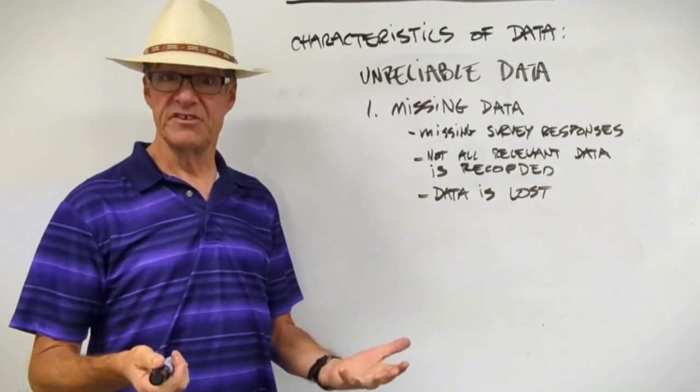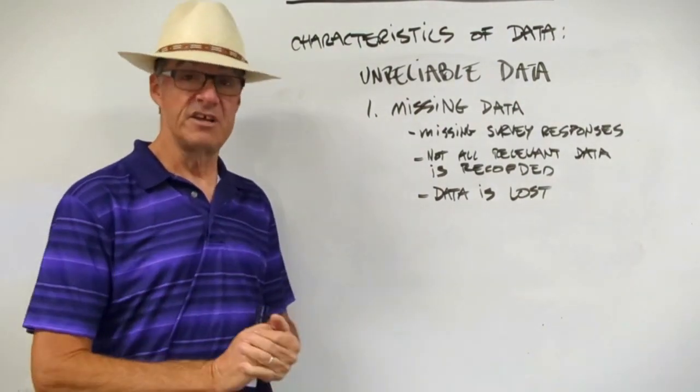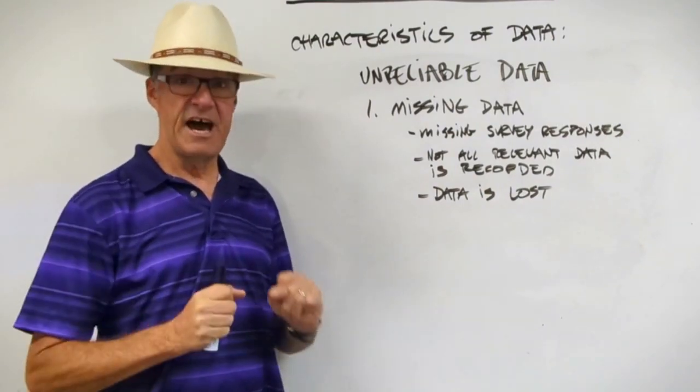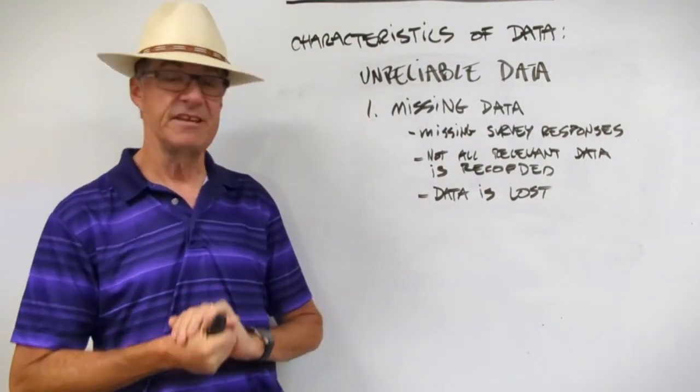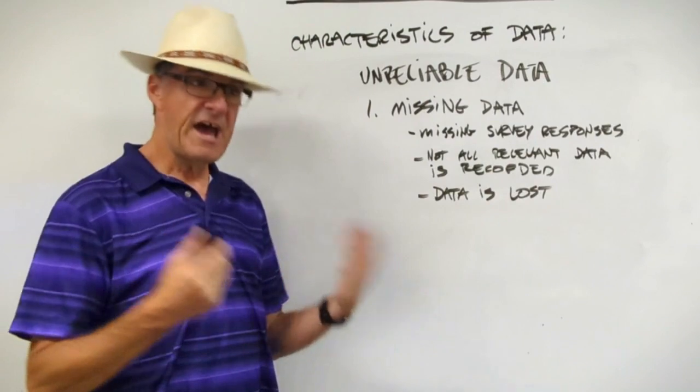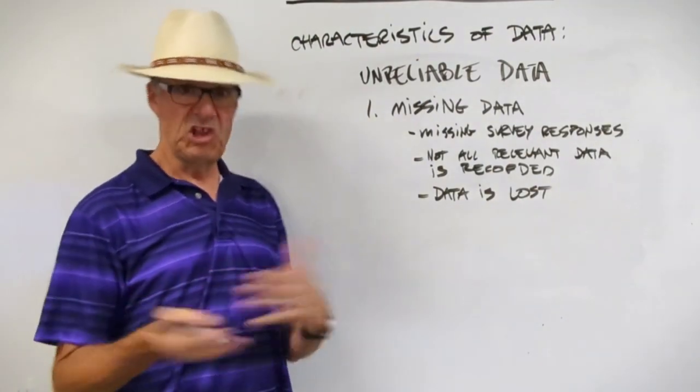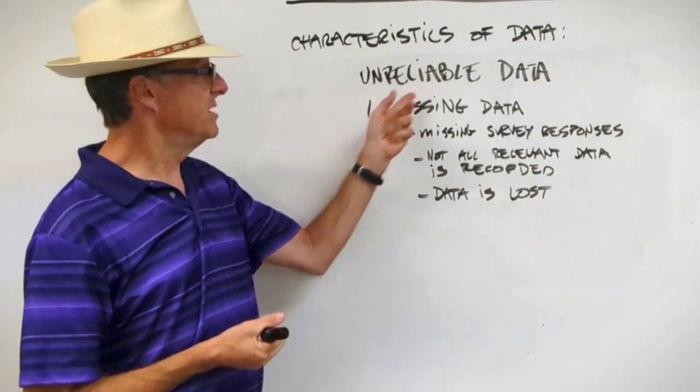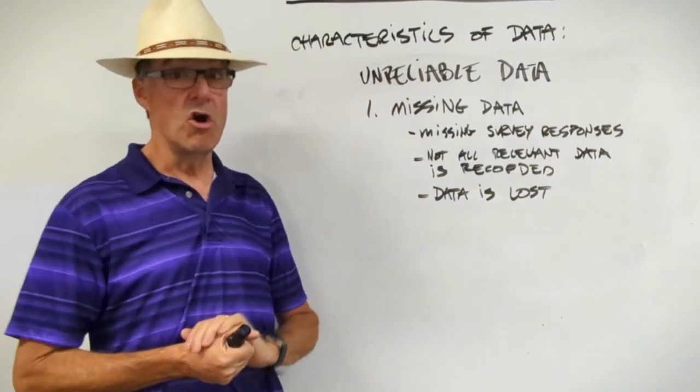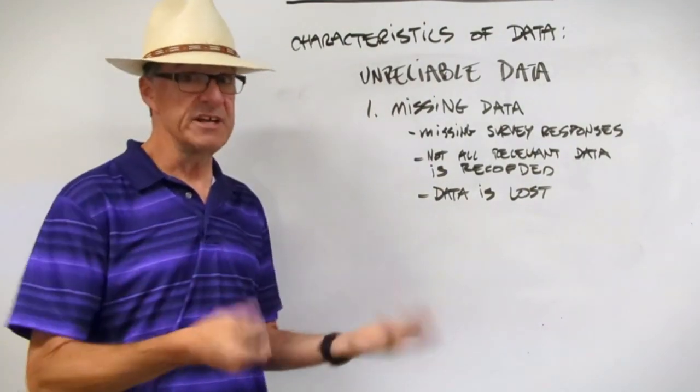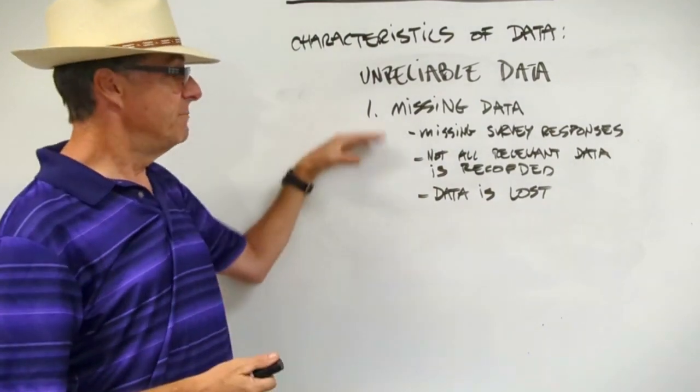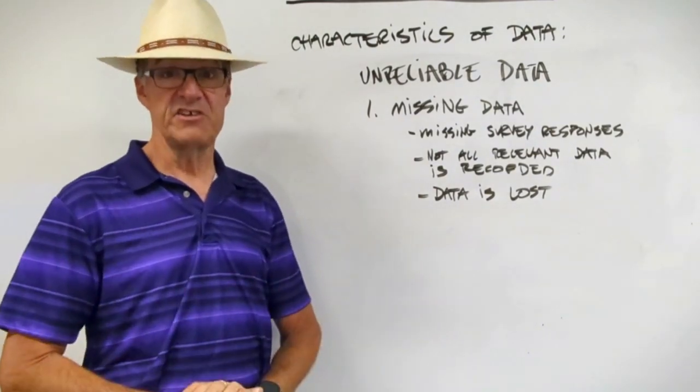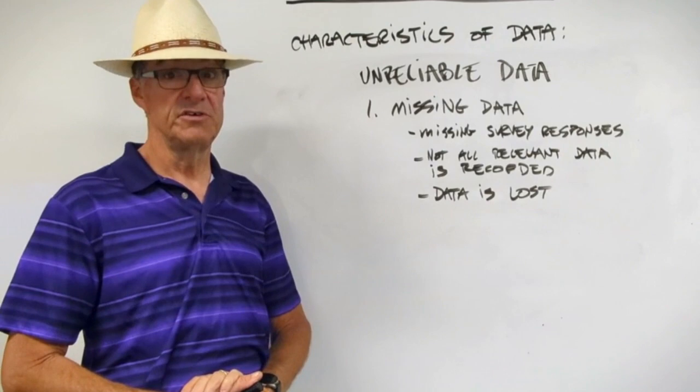Finally, data could be lost. Historians will dig back into historical records, grab data out of there, do statistics on it to be able to say things about populations. If half the data for a county was lost in 1885, then that data becomes unreliable because we don't know about half the people that we're trying to say something about. So missing data can really affect the results of your statistical study.